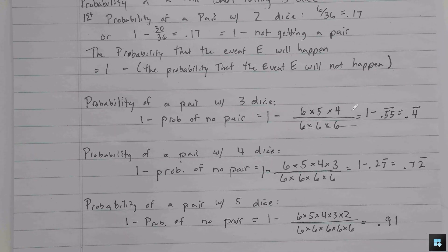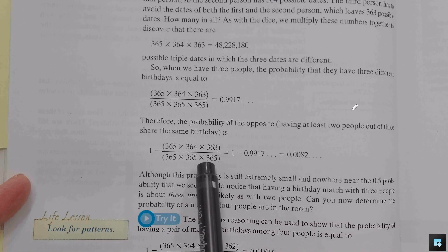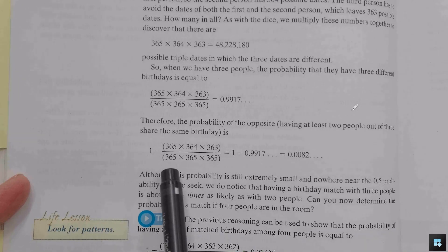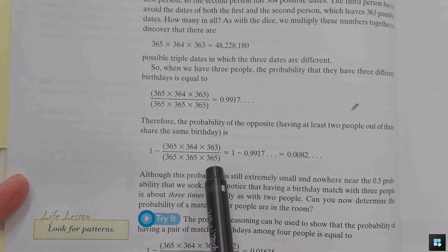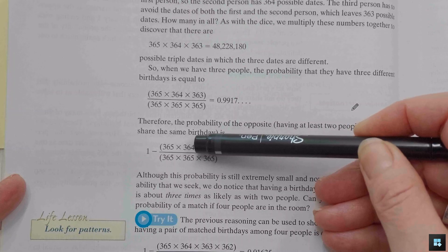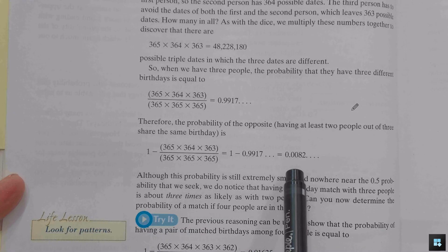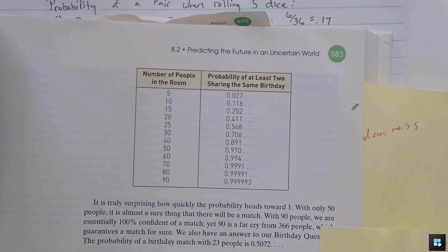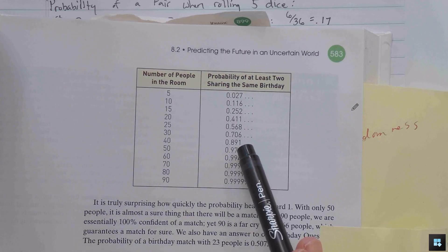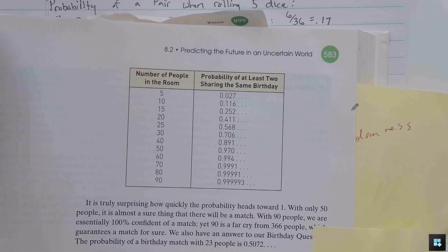The idea of calculating shared birthdays is very similar. With three people, the total combinations are 365×365×365. The first person can have any birthday, the second avoids the first (364 choices), and the third avoids the first two. So it's 1 minus the probability of no shared birthday. As the author calculates for higher numbers, with 40 people in a room the probability of a shared birthday reaches 0.89. I'll see you in class on Wednesday.